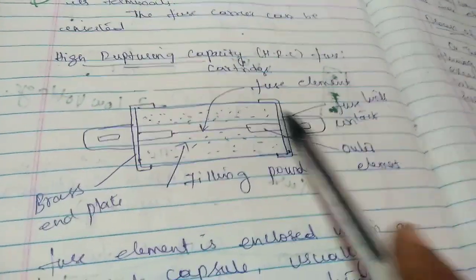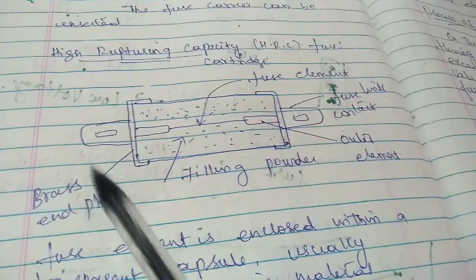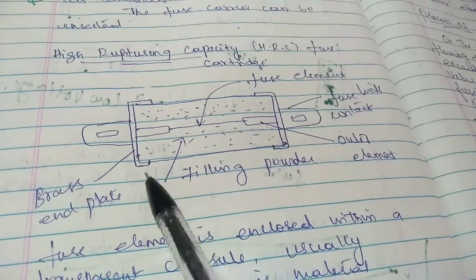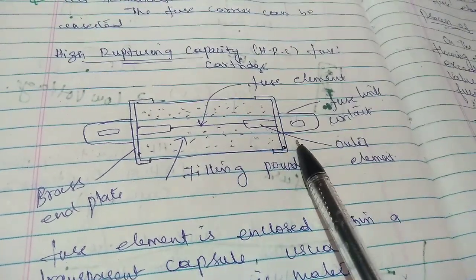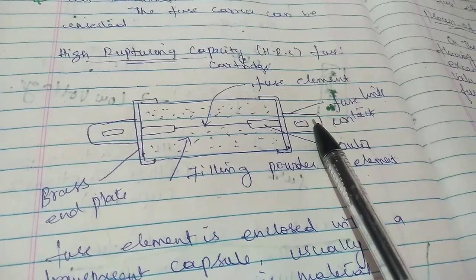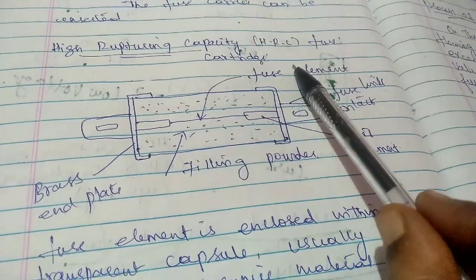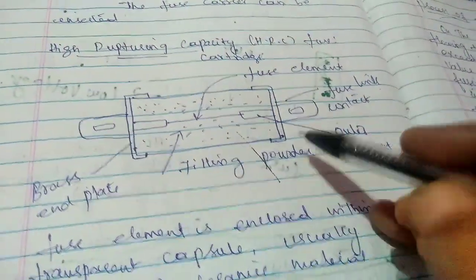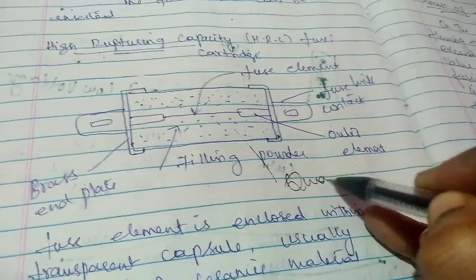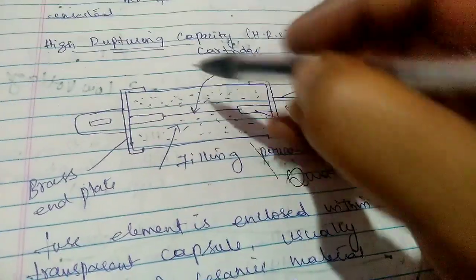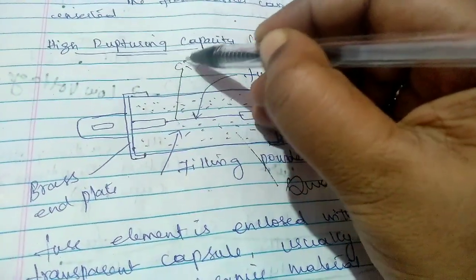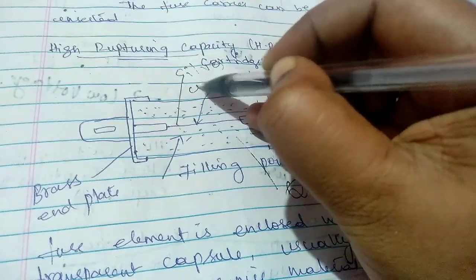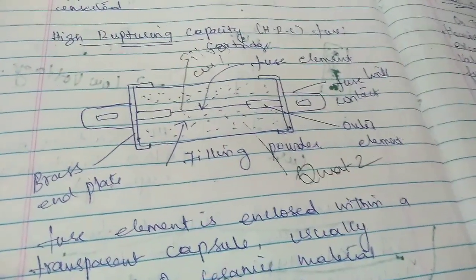So this is the diagram of the HRC fuse. You have brass end plates at both ends, and this is the fuse link contact. This is the fuse element and you have a filling powder. This filling powder is quartz, and the fusing element may be silver or copper, most probably copper.